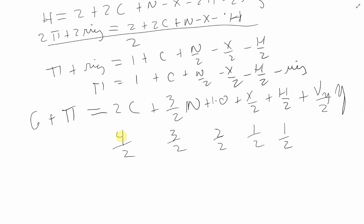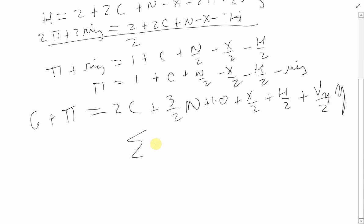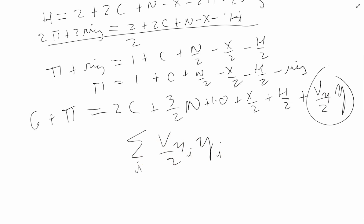We can write this in a general mathematical form as the sum over all elements of (valency_i / 2) × (count of element i). This is a compact way to compute the total number of sigma plus pi bonds for any molecule, regardless of which elements are present, as long as you know their valencies.